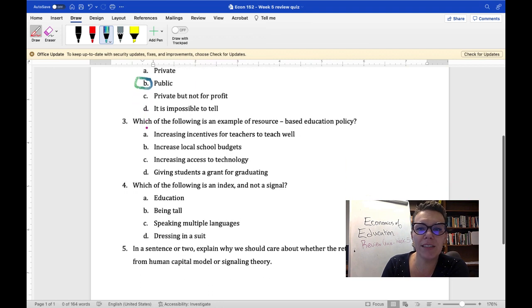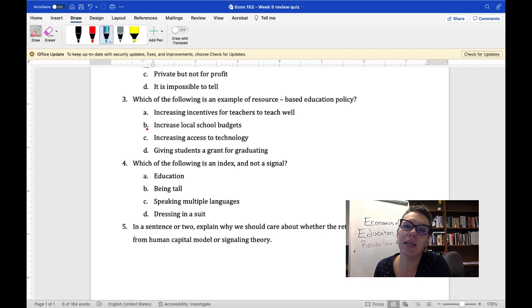Which of the following is an example of a resource-based education policy? If you don't remember, resource-based education policies are basically looking at shifting out the PPF, just increasing resources generally, not something specific to say an outcome or anything like that. So of these options, incentives for teachers teaching well, access to technology, and giving grants for graduating, those are all altering incentives and the production function. Only increasing school budgets is a pure resource-based solution.